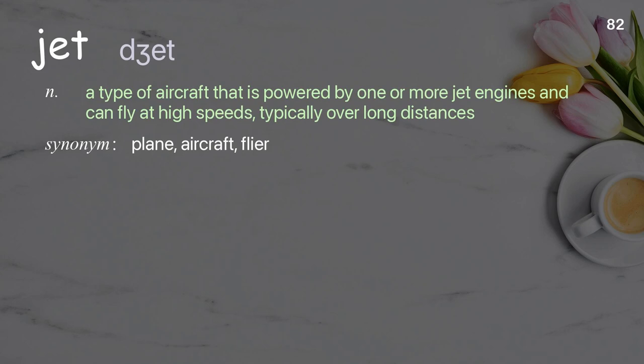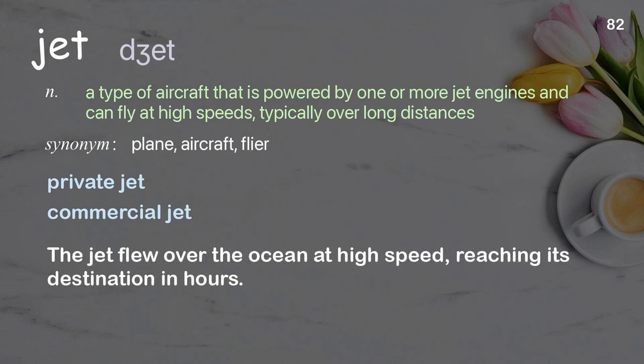Jet: a type of aircraft powered by one or more jet engines that can fly at high speeds, typically over long distances. Examples: private jet, commercial jet. The jet flew over the ocean at high speed, reaching its destination in hours.